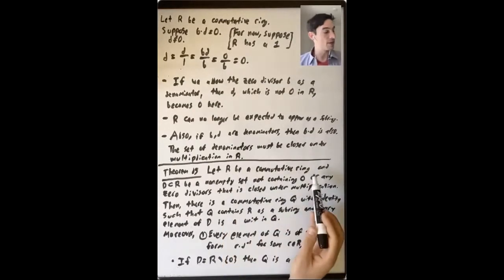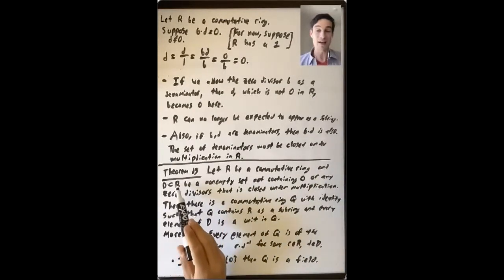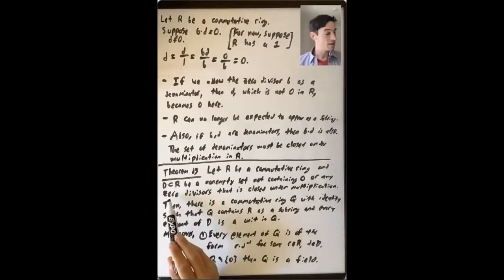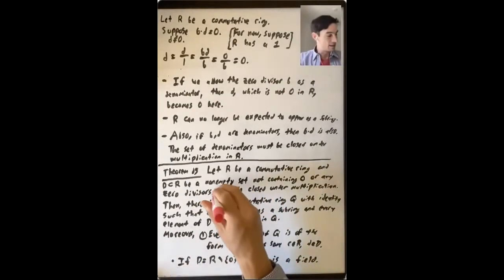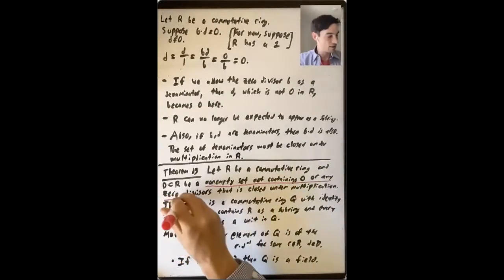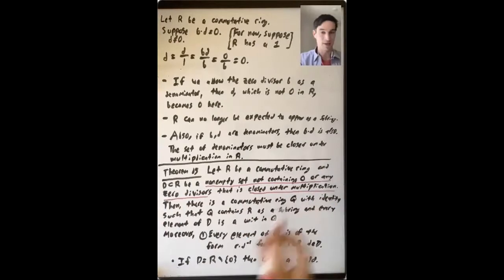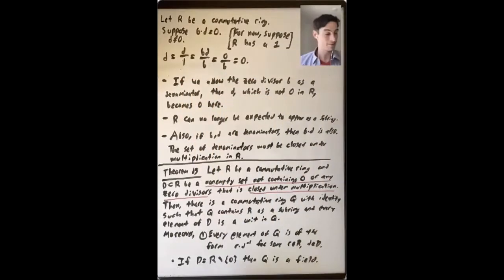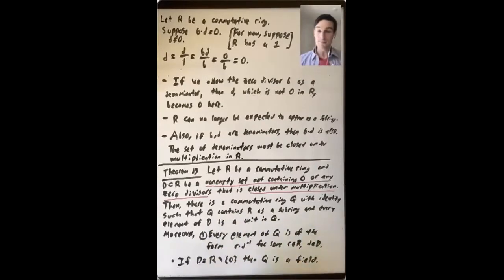So what's the setup? We take R to be a commutative ring and we take D to be a subset of R that is non-empty, does not contain zero and doesn't contain any zero divisors, and is closed under multiplication. So D is this non-empty set not containing zero or any zero divisors, closed under multiplication. Think of D as the set of denominators — this discussion motivates why those two requirements are on D.